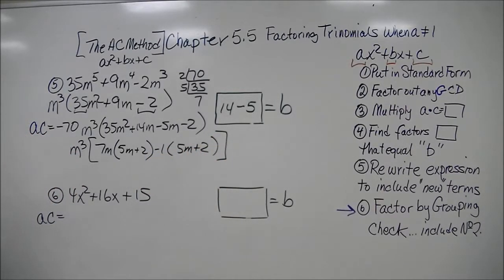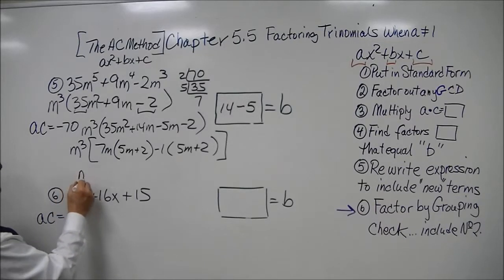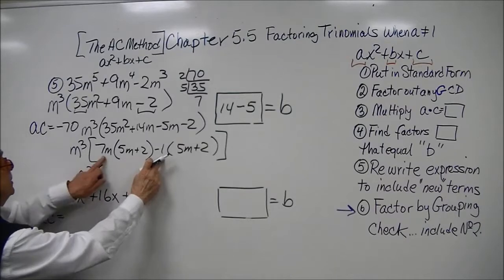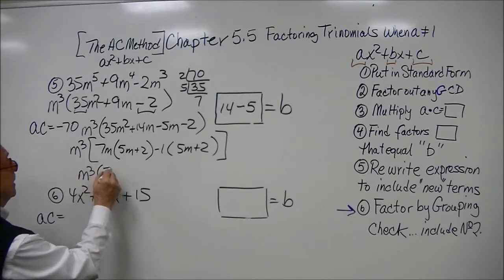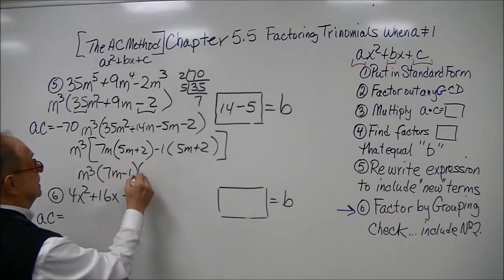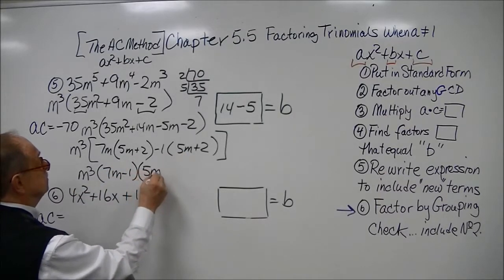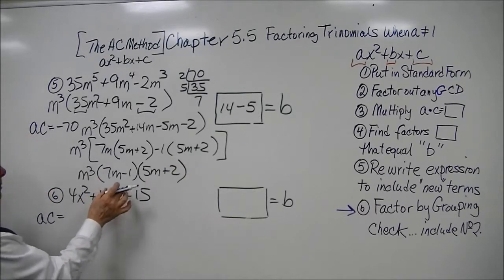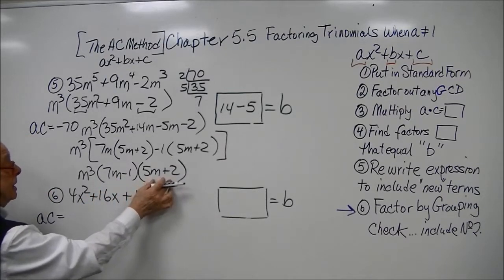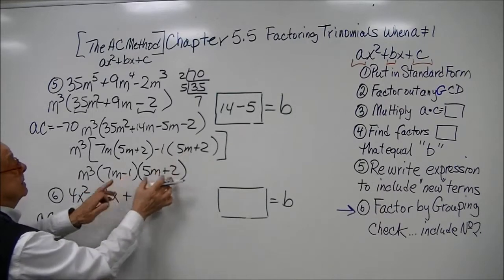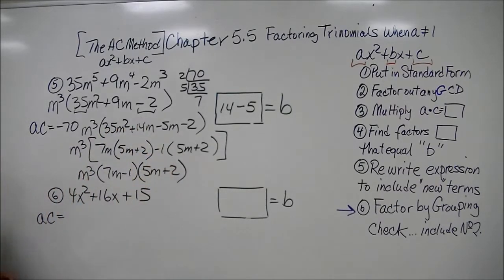Our final answer is m cubed times 7m minus 1 times 5m plus 2. If we were to multiply these traditionally, we would multiply each term and work forward or backward depending on what you're doing.